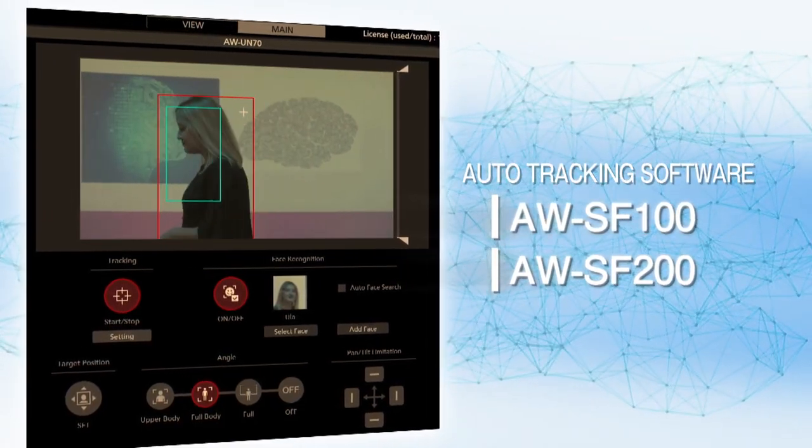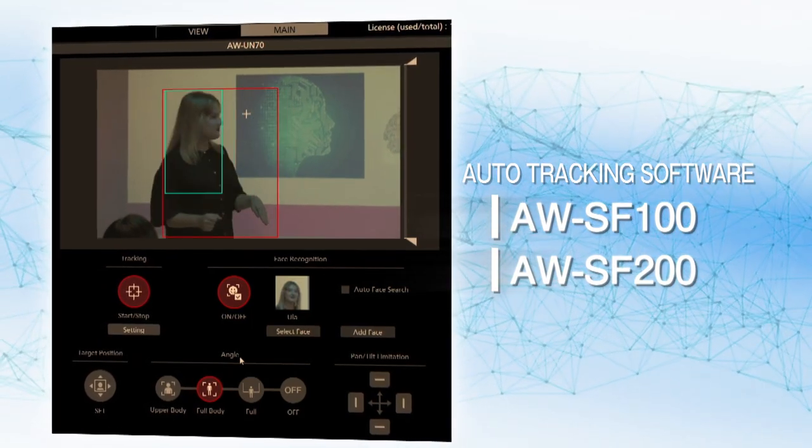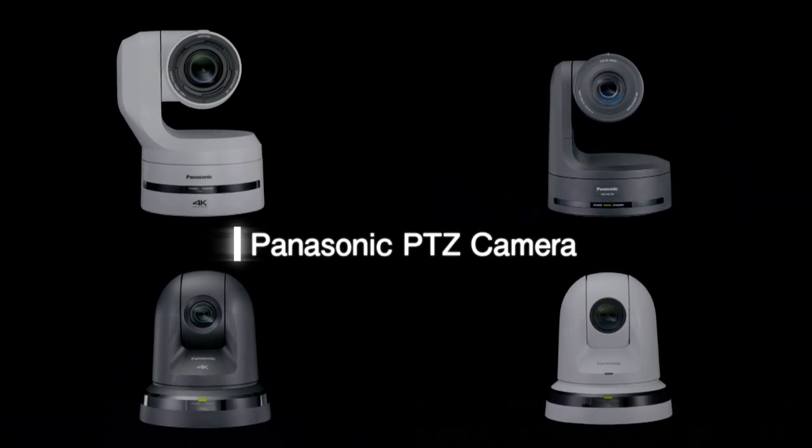Installing the auto tracking software AWSF100 and 200 adds an automatic tracking capability to your Panasonic PTZ camera, allowing you to track target individuals automatically.